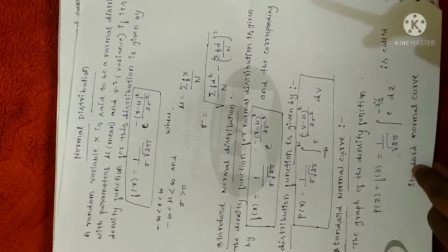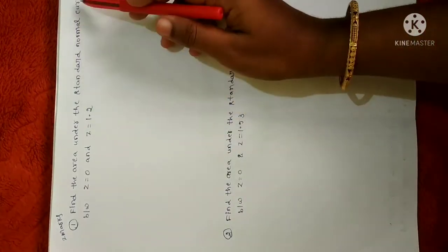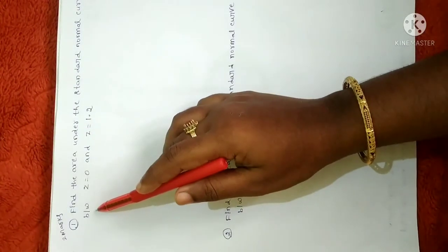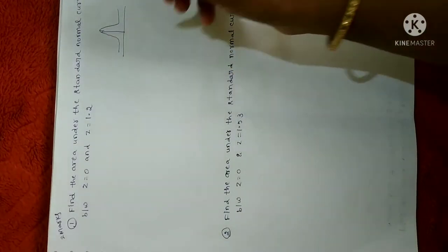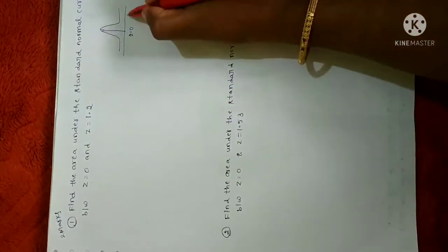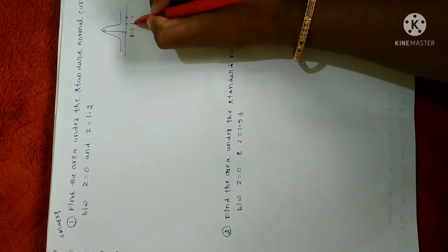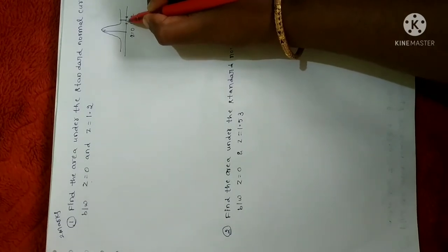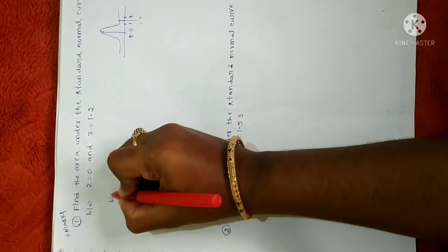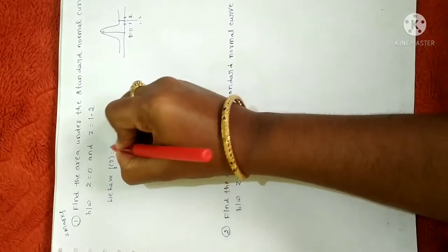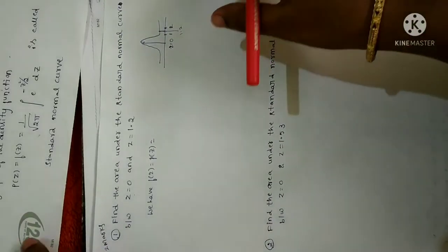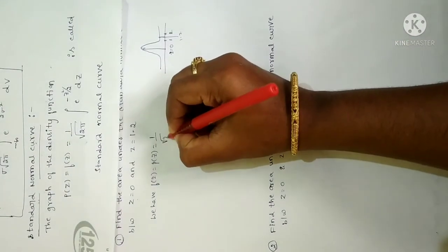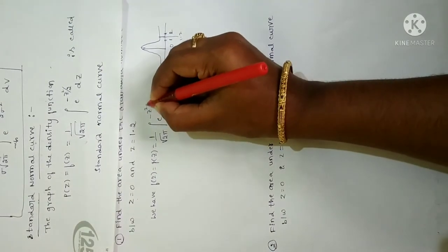Find the area under the standard normal curve between z equals 0 and z equals 1.2. The standard normal distribution curve has z equals 0 exactly at the midpoint. We write this in standard form: probability of 0 less than or equal to z less than or equal to 1.2, which equals 1 divided by square root of 2 pi, integral from 0 to 1.2 of e to the power of minus z squared by 2, dz.